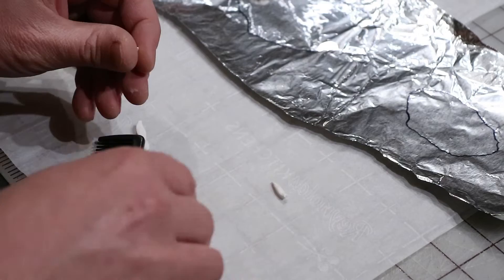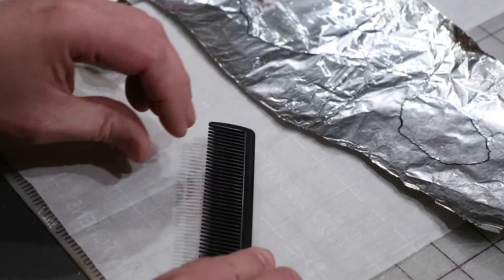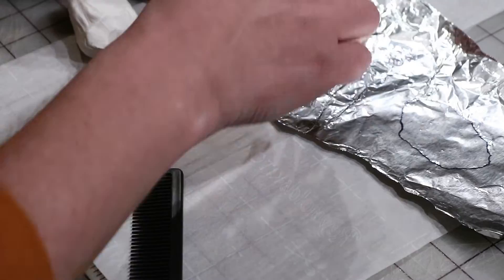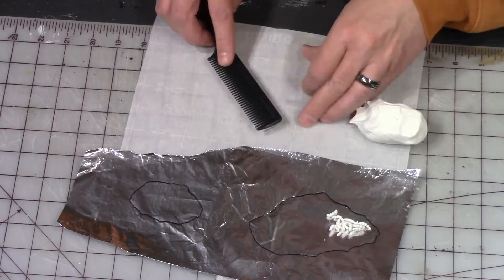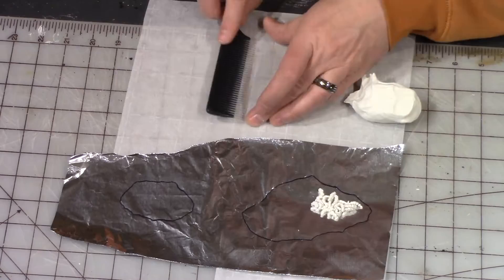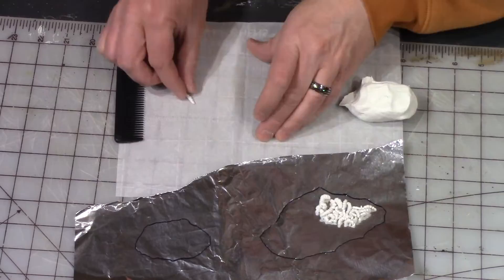Now we're going to start making the grubs. I just used white Sculpey as the base of the grub and I'm just forming some small balls of Sculpey and using a tooth comb and brushing that little ball into a worm-like figure with the tooth comb. The teeth on the comb end up giving the little grubs the ridges that they have and it ends up being just a really nice texture.